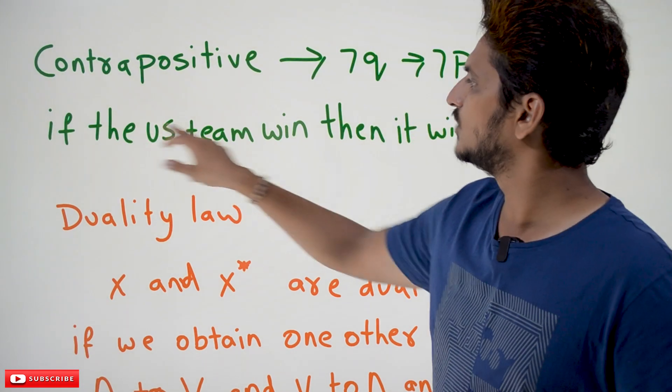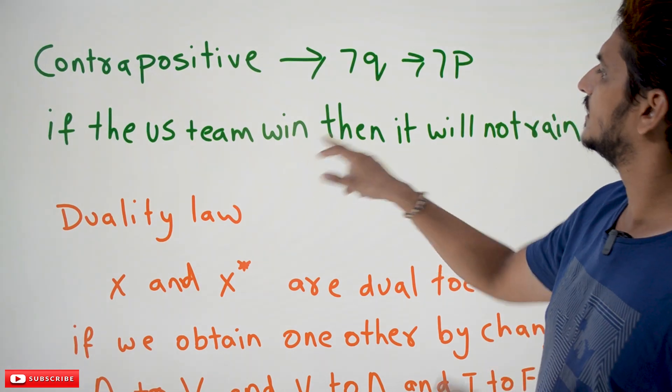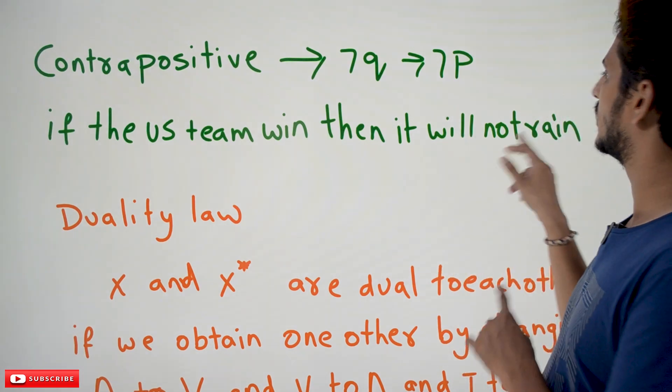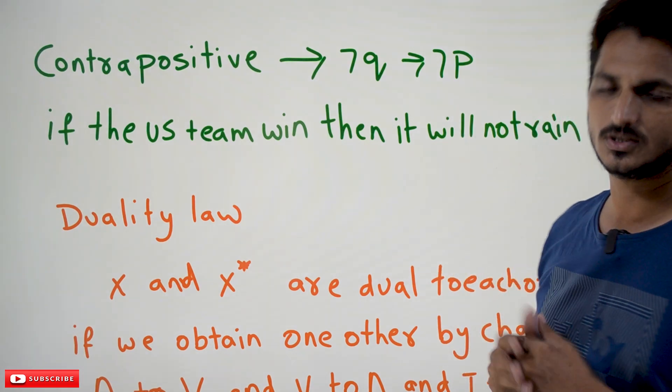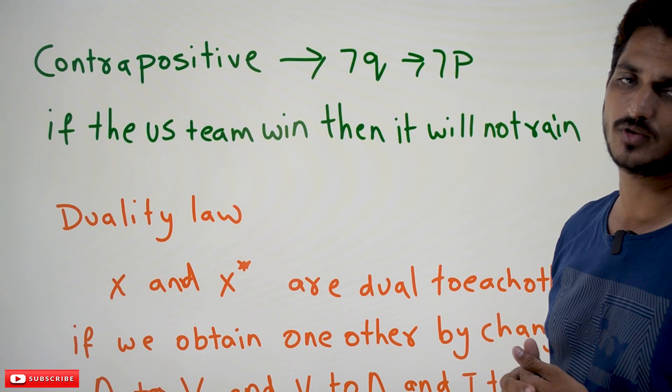The contrapositive means negation Q implies negation P: 'If the US team will win, then it will not rain.' That is the contrapositive for P implies Q. These are very simple.